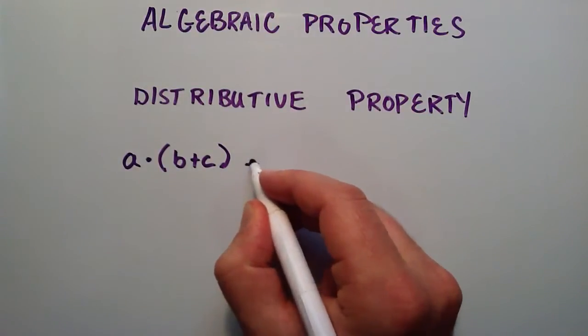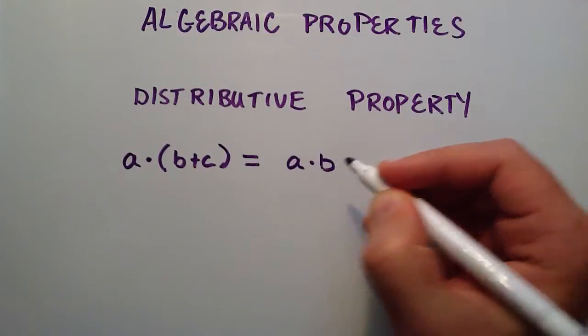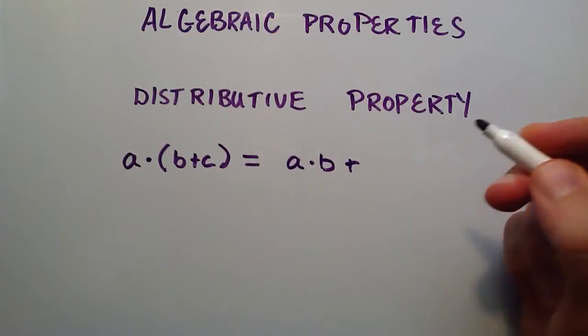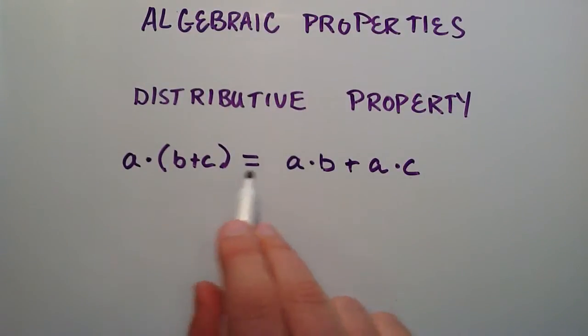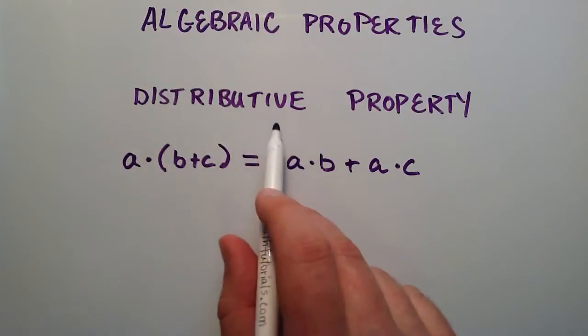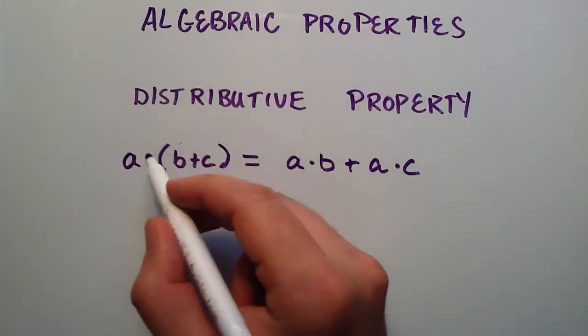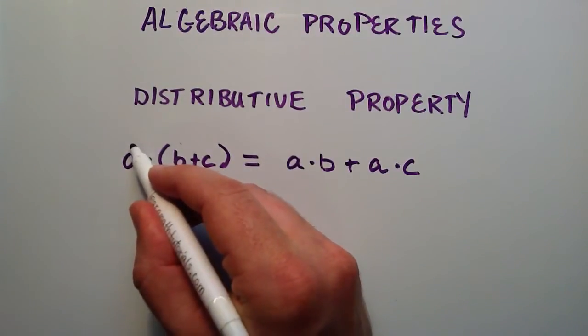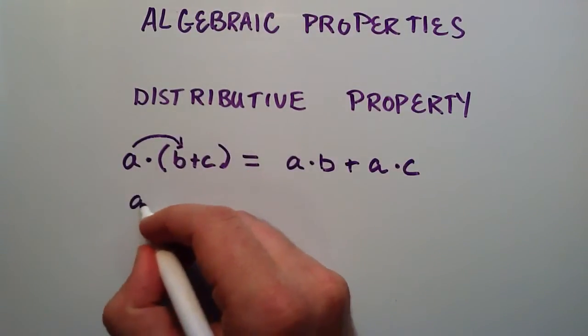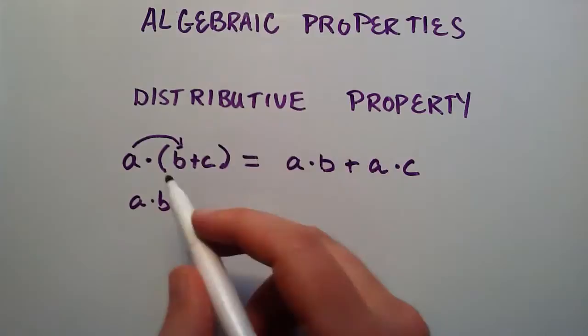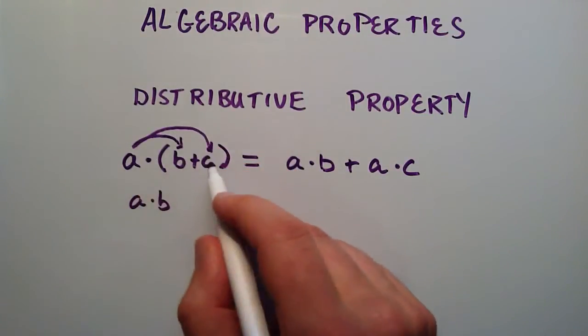And the distributive property tells us that that's equivalent to multiplying a times b, and then adding that result to a times c. So how did we get from here to here? The distributive property basically distributes the a inside the parentheses. And so basically what we do is we take the a and we distribute it to the b, and that gets us our a times b term. And then we distribute once more to the c, a times c.